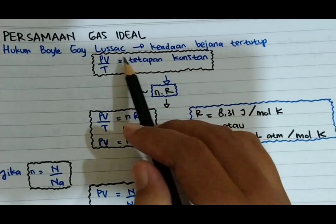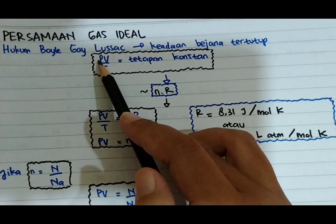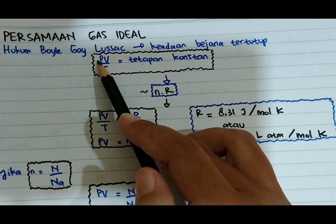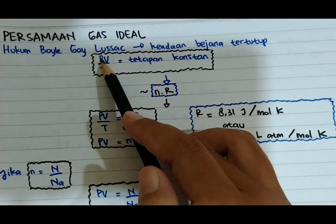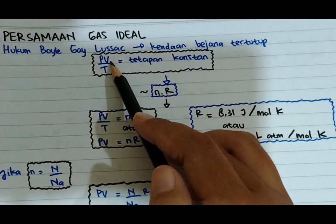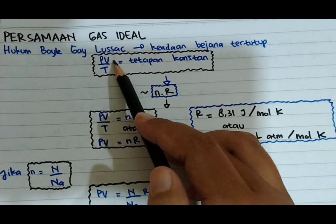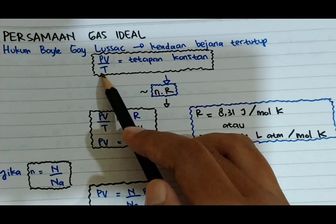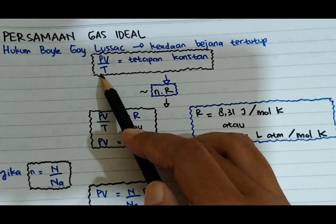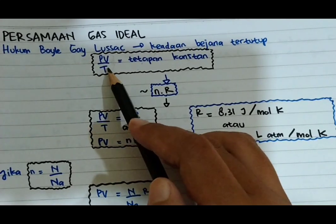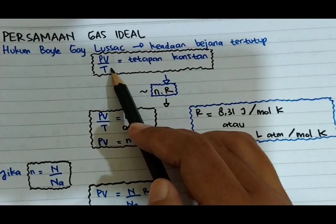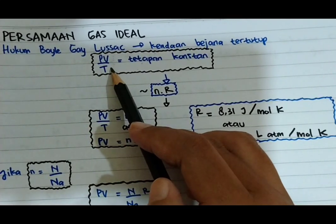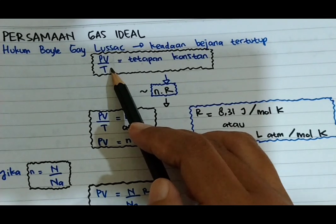P di sini merupakan tekanan, kemudian V merupakan volume, kemudian T besar di sini merupakan suhu pada bejana tertutup.